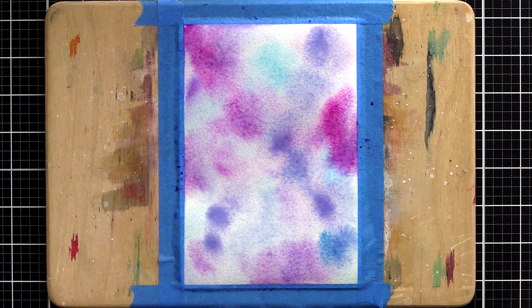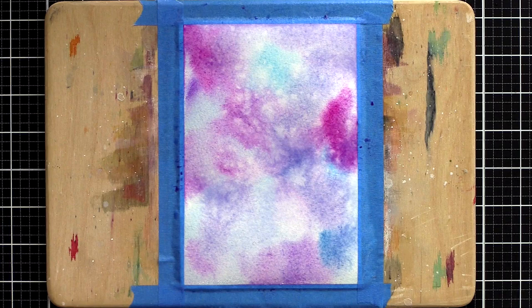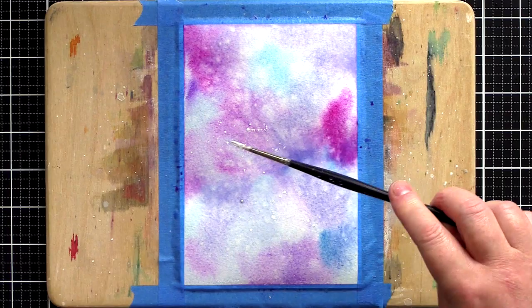With a background like this I aim to get a variation in the depth of color with some darker patches and equally some lighter areas too. And a great way to do the latter is to add water splashes which push the color away to the edges of the water droplets.